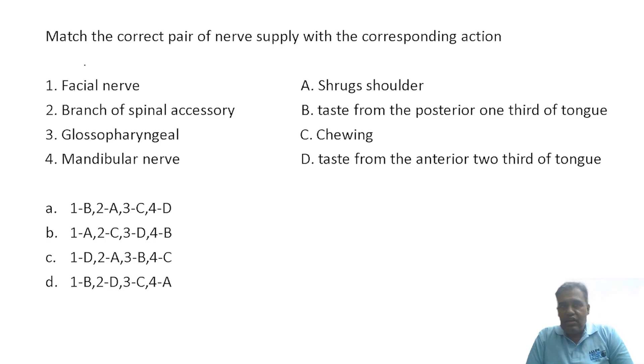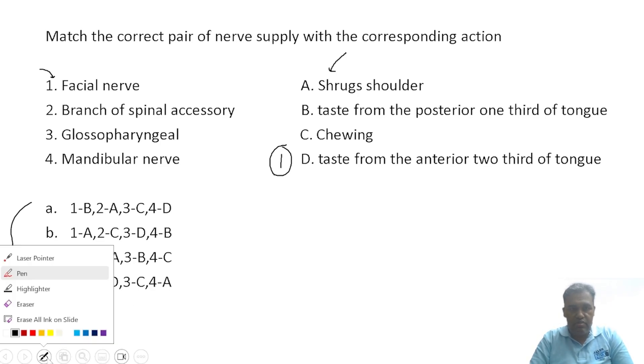Beautiful question from head and neck. Match the correct pair of nerve supply with the corresponding action. Nerve supplies are given on the left column, actions on the right. If you have basic idea of head and neck, this should be a cakewalk. Facial nerve supplies facial muscles, but apart from this it also has branches inside the middle ear. One of those branches is the chorda tympani, which carries taste from the anterior two-thirds of tongue and is the parasympathetic motor supply to submandibular and sublingual glands. So here you have taste from the anterior two-thirds of tongue for option 1.